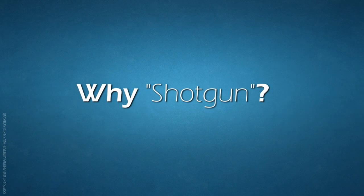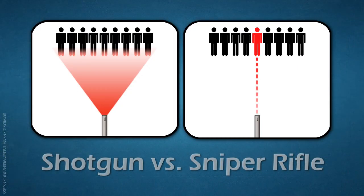The Shotgun approach, in essence, is when you try and be everybody's friend. That is, you try and develop marketing materials that appeal to as wide an audience as possible. The Shotgun approach takes its name from the way a shotgun operates — it sprays bullets onto a wide area, thus hitting a number of targets. The problem being that it doesn't hit any of them with enough force to actually make a difference.